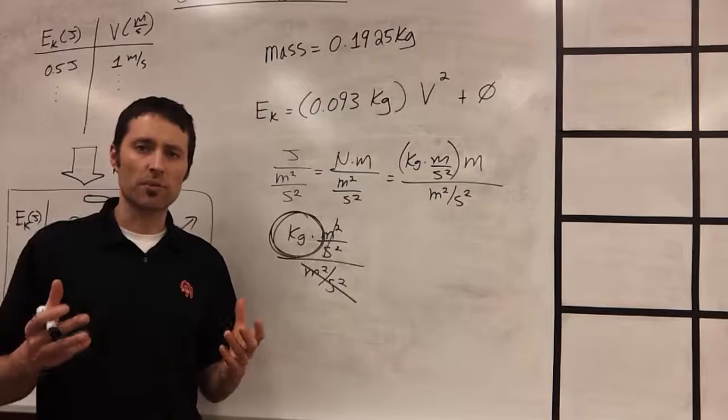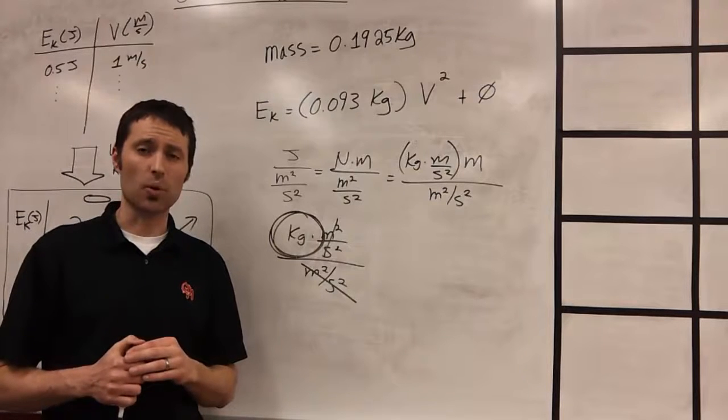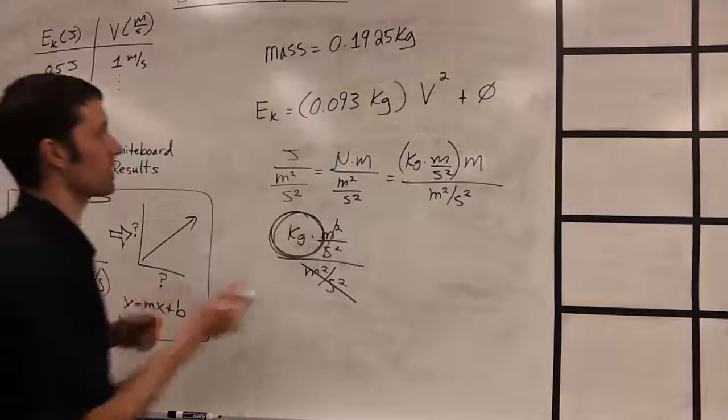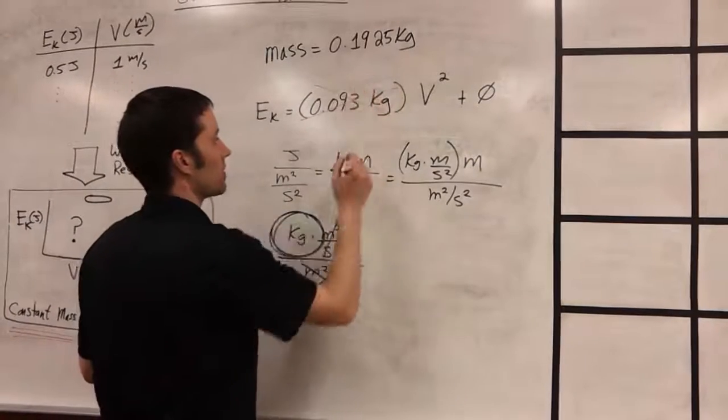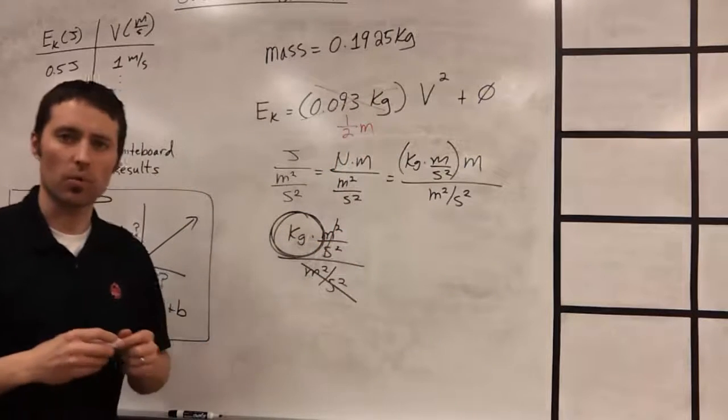So now that we see that most of our whiteboards, or the majority of our whiteboards, showed that the slope is exactly one half of the mass of the object, we can now take this equation, and instead of having a mass value, let's just write in one half of the mass, or one half m.